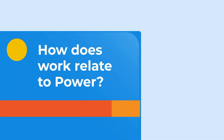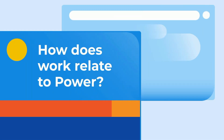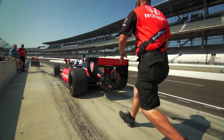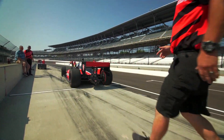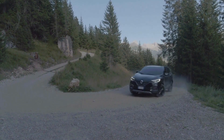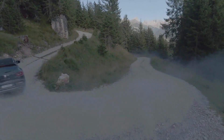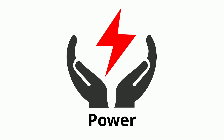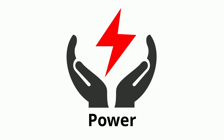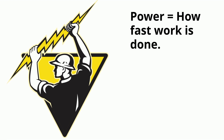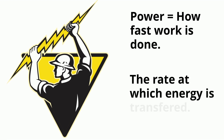Now let's talk about how work relates to power. Which of these two cars is more powerful — this race car or the friendly family car? Yes, the race car. But what are you measuring when you talk about power? You can think of power as how fast work is done, or the rate at which energy is transferred.